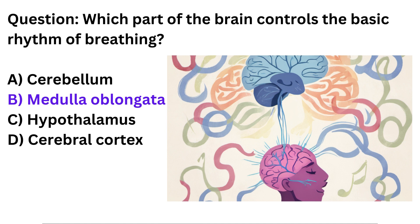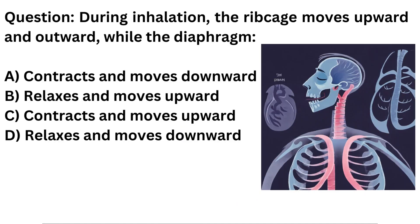Answer: B. Medulla oblongata. Question. During inhalation, the ribcage moves upward and outward, while the diaphragm: A. Contracts and moves downward. B. Relaxes and moves upward. C. Contracts and moves upward. D. Relaxes and moves downward.